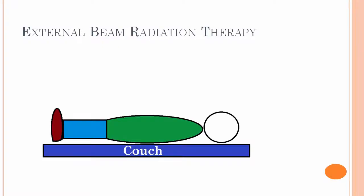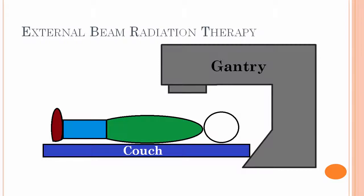Now, linear accelerators are used in external beam radiation therapies, and this involves a patient on a couch, and there's a gantry that houses the linear accelerator to produce the photons for treatment.